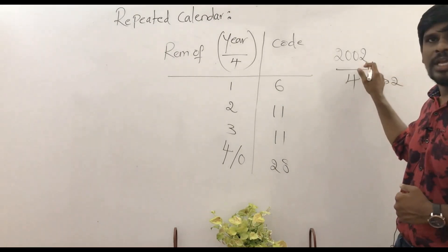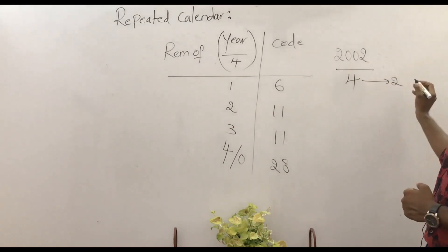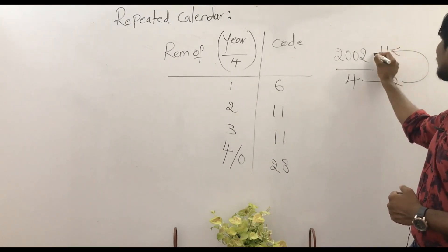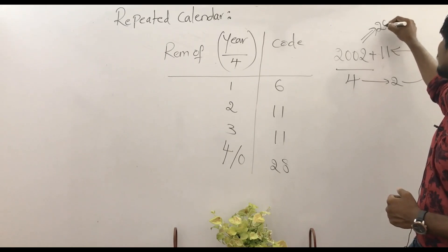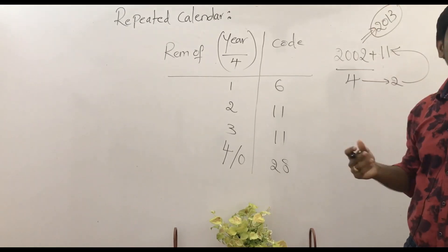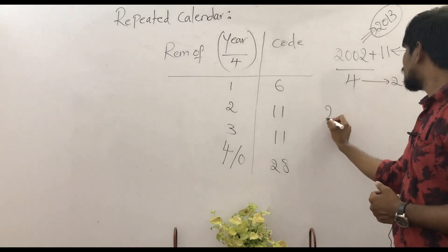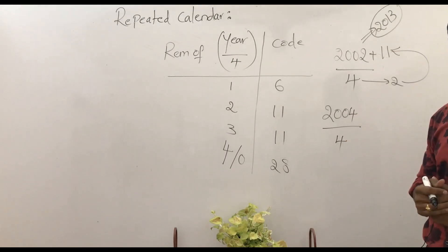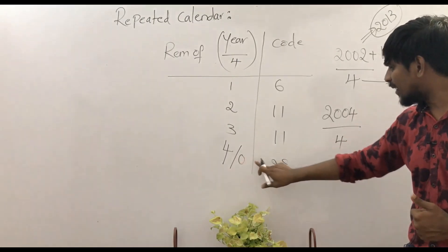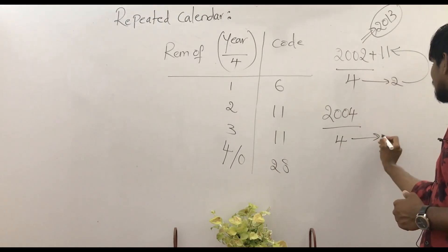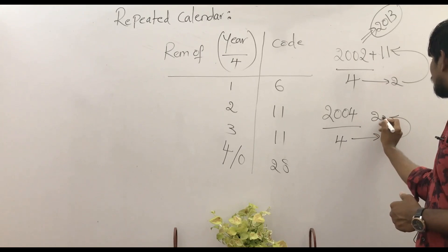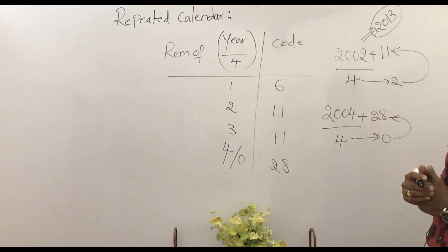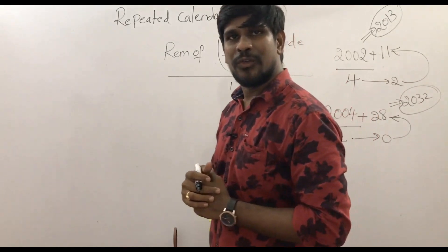2002, a year repeated calendar you can tell with this shortcut. 2002 divided by 4 gives 2 remainder. 2's corresponding code is 11. In 2002 plus 11, you will get 2013. This is the required answer - simple. In the same way, 2004 divided by 4 gives 0 remainder. 0 code is 28. 2004 plus 28, you will get 2032 as the required answer.